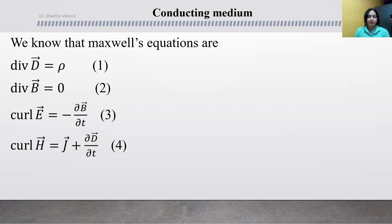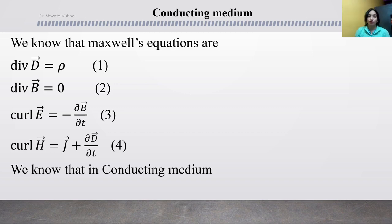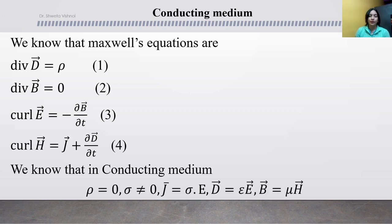Then we will write the conditions of conducting medium. The volume charge density is not available in the volume — it is 0. However, surface charge density is not equal to 0; conducting medium may have charge on the surface. So J equals sigma E, D equals epsilon E where epsilon is permittivity, and B equals mu H where mu is permeability of the conducting medium.